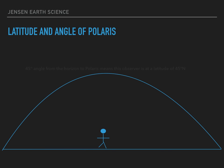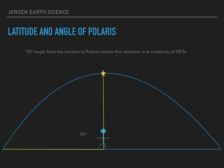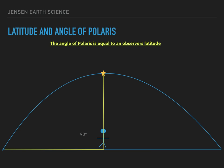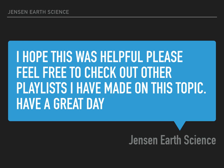If my star is even higher in the sky, I must be even further North in latitude. So if my angle is 90 degrees from the horizon to Polaris, and I'm looking straight up into the sky, a 90-degree angle from the horizon to Polaris means this observer is at a latitude of 90 degrees North. So ultimately, the angle of Polaris is equal to an observer's latitude. I hope this was helpful. Please feel free to check out other playlists I've made on this topic. Have a great day.